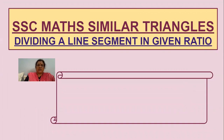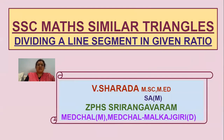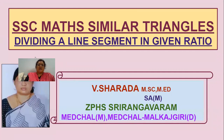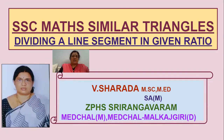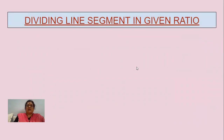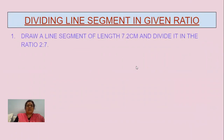This is a very important concept in similar triangles, and I'll show it with the geometry instruments used while constructing. The problem is: draw a line segment of length 7.2 centimeters and divide it in the ratio of 2 is to 7.